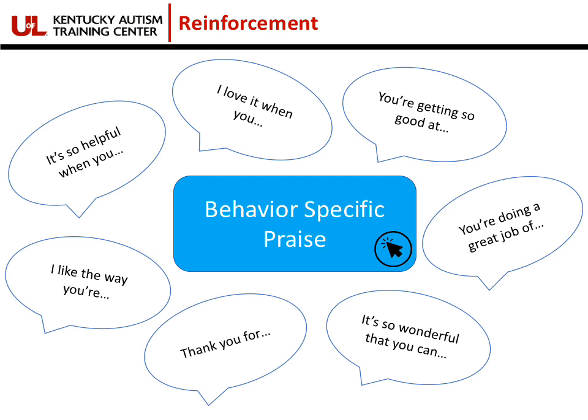One wonderful and easy, no-cost way to provide reinforcement — especially if students' behaviors are typically trying to get adult attention — is to provide behavior-specific praise. This also goes back to a characteristic of autism where students need very explicit instruction. Simply saying 'good job' or 'nice work' may be too abstract. They need to know in that moment what specific thing they are doing well that you as their teacher would like them to keep doing. There are lots of different sentence stems you can use, and an article is linked here on three helpful ways to remember to use behavior-specific praise during the day.